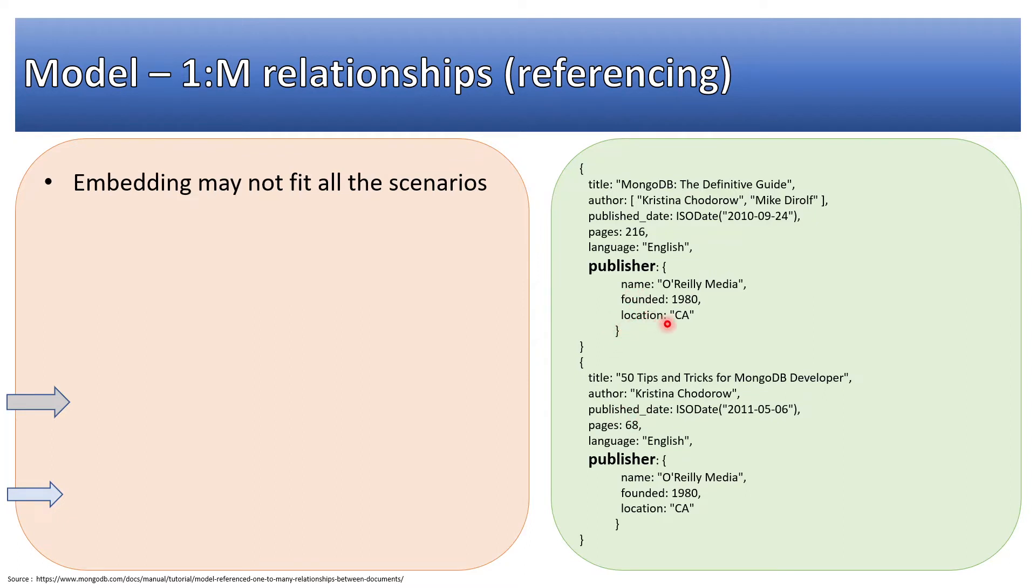We cannot embed publisher information in the book because it will be difficult to update this information when it comes to updating publisher information. That will be so problematic or so performance consuming that it will be a write-intensive job. And we cannot think of storing book information inside publisher because that publisher might have published